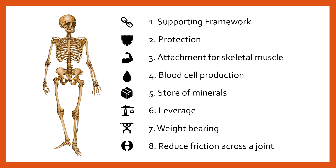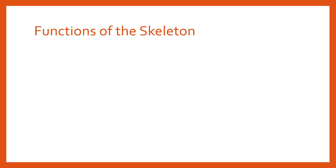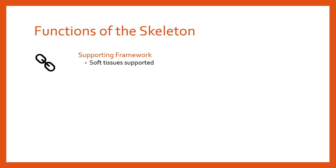So these are the eight primary functions of the skeleton — not the sole functions, but they'll do for us for now. First of all, supporting framework. What do I mean by that? Well, I simply mean there is a framework around which the rest of the body can fit and be built. The skeleton forms the basic shape and structure of the body and supports the soft tissues that are embedded beneath, around, and on top of the skeleton.